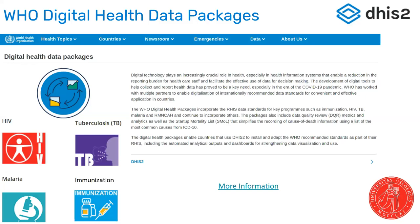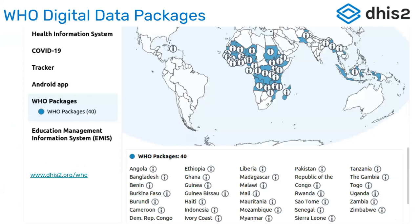DHIS2 if you download it from GitHub or from our website, it comes as an empty system that must be configured to adhere to your use case. But with these packages, the idea is that it's pre-configured — it already covers the kind of data that you would like to be collecting, it matches a workflow that makes sense for a majority of countries, and it provides the kind of analytics and indicators that you would want. We've been working with this for quite some time. I'm just showing a screenshot of our current map of where these many different WHO packages have been adopted.